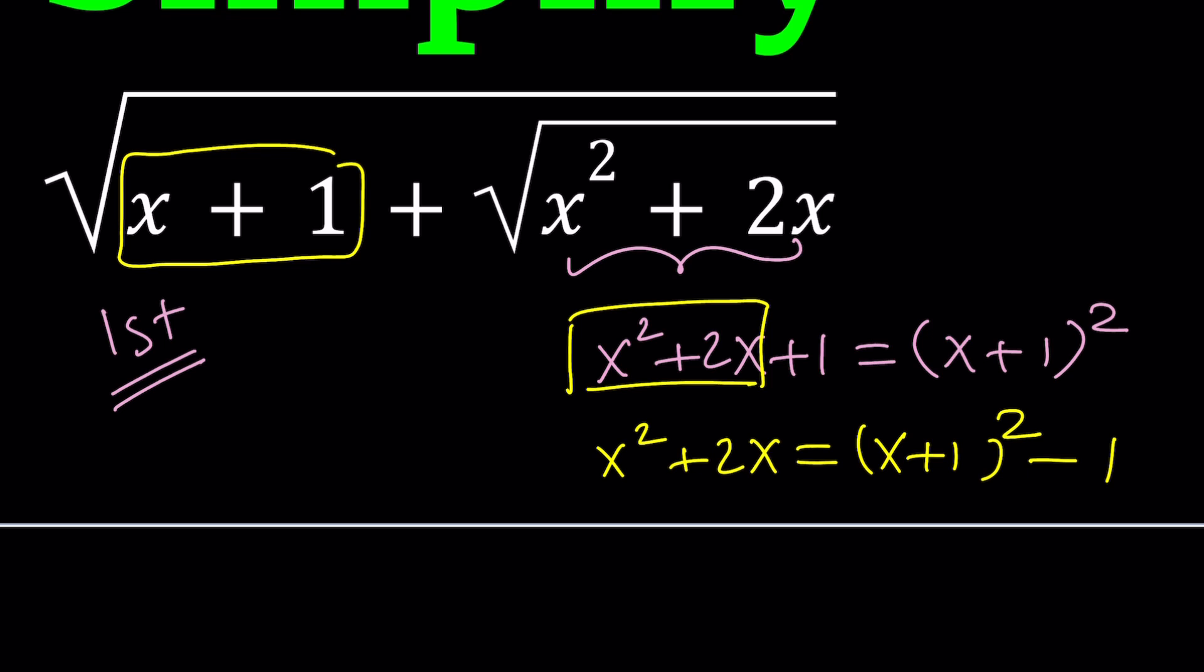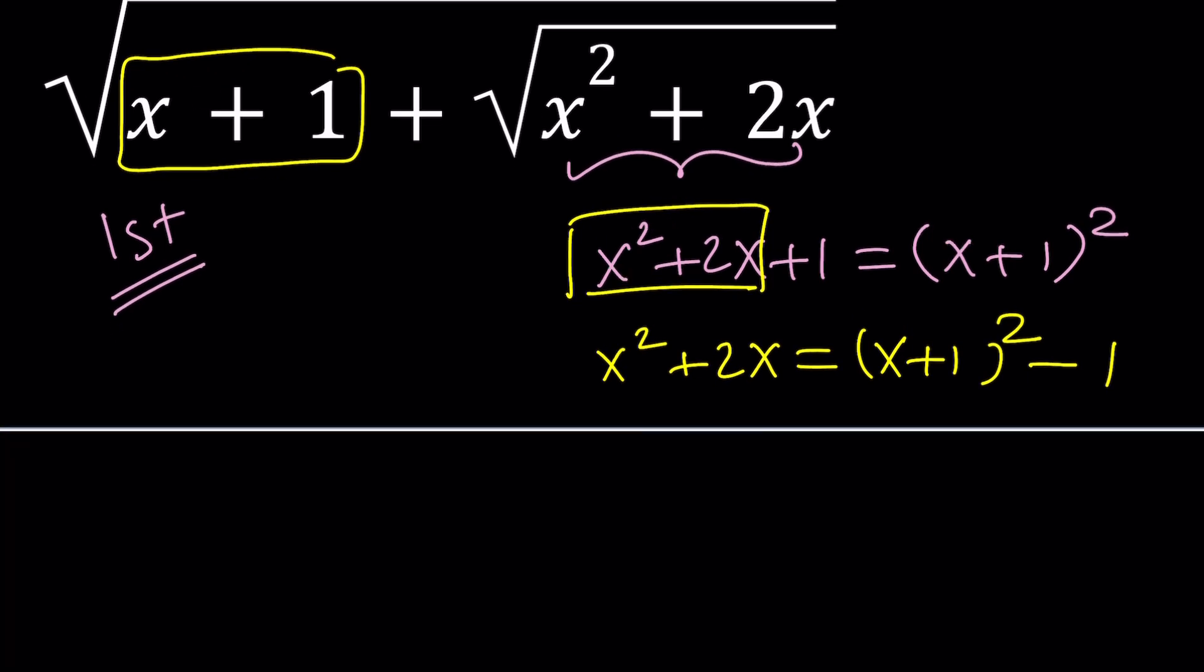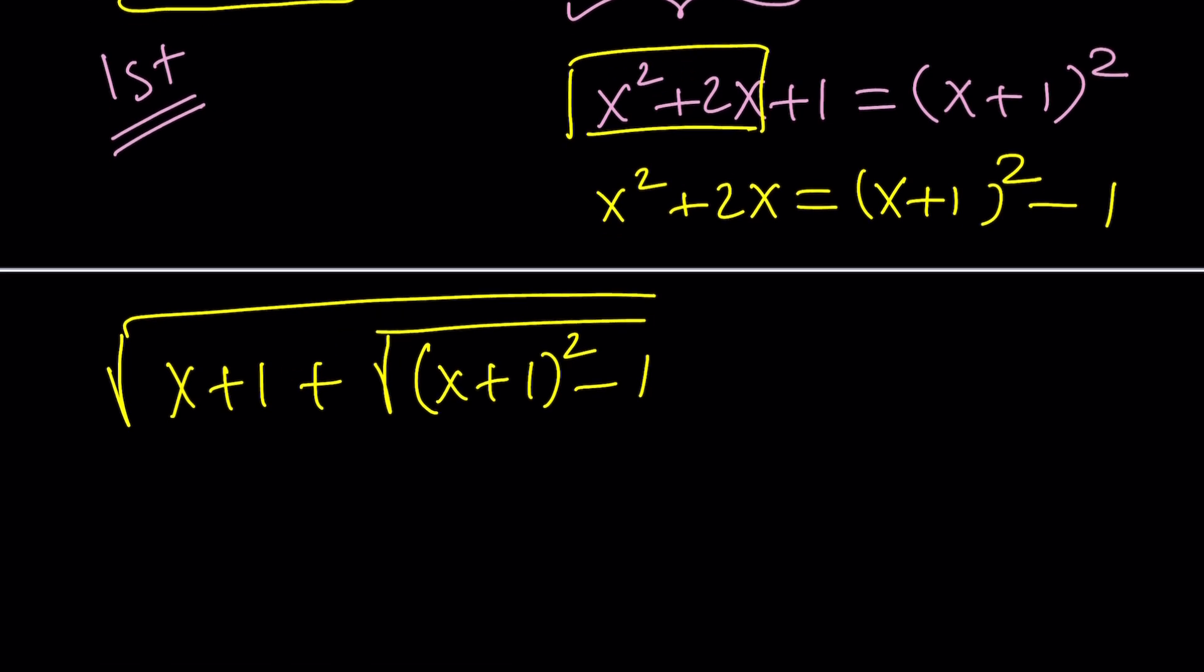That's what we're going to do because we do have an x plus 1 here, which is going to help us simplify this expression. Okay, great. So let's go ahead and replace the inner radical with x plus 1 squared minus 1.